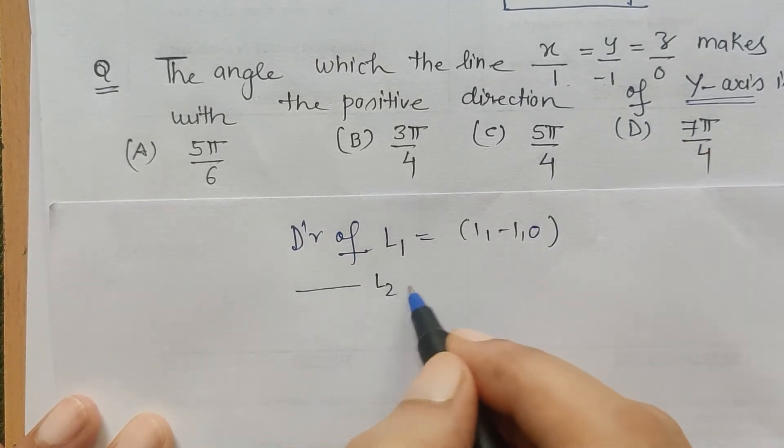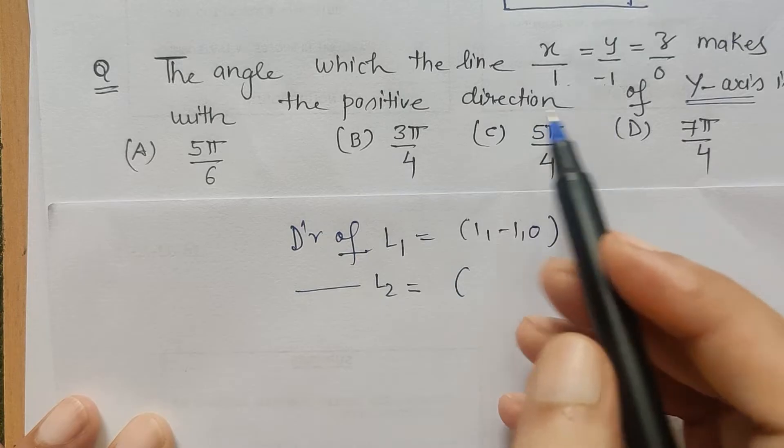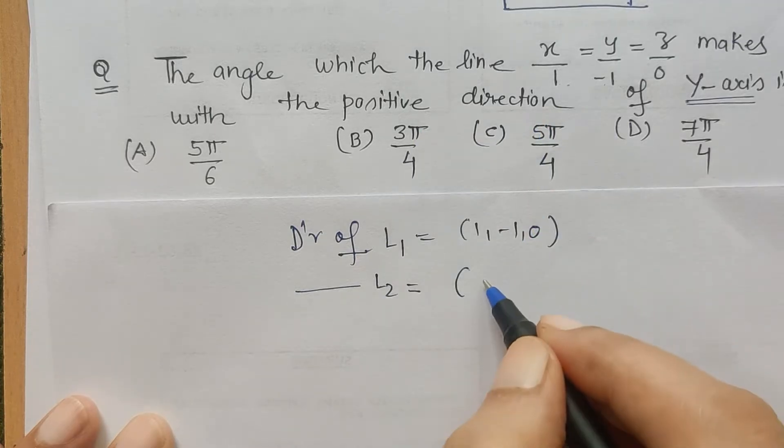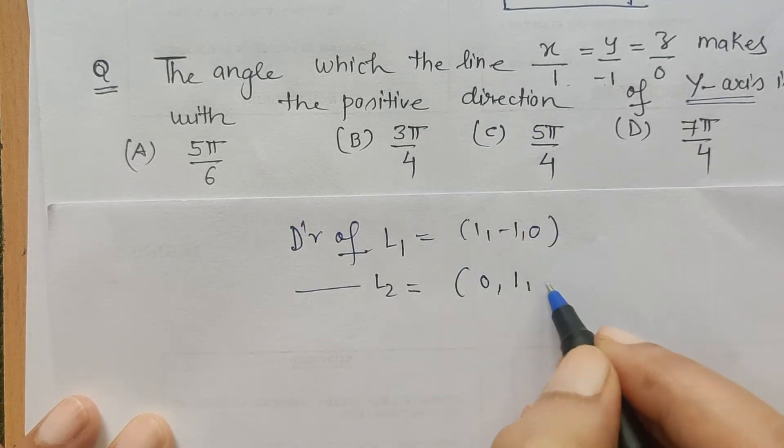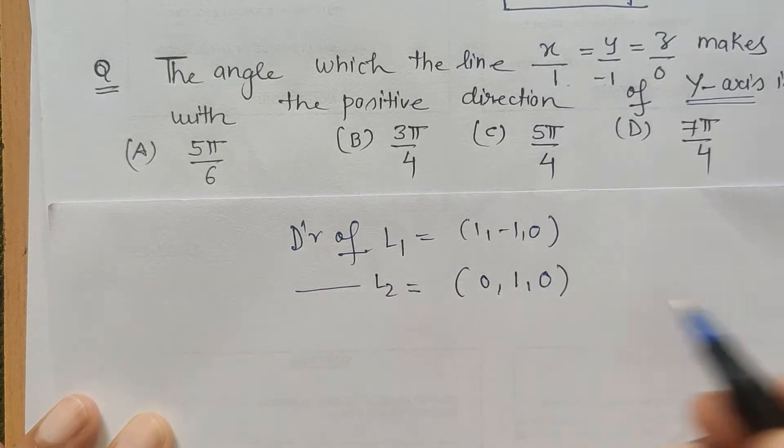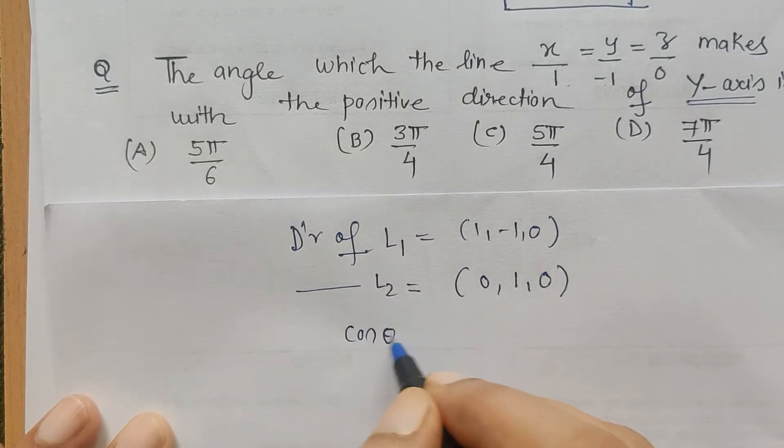The directional ratio of the second line will be, because it is along the positive direction of y-axis, so x coordinate is 0, let's say y coordinate is 1, and z is 0. Now the angle which it is talking about is given by b1 dot b2 upon magnitude of b1 magnitude of b2.